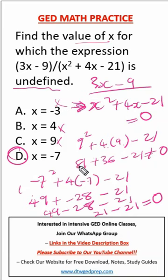If you're interested in joining our intensive classes, we have group classes at $25 per month. You can join our WhatsApp group - you'll see the link in the video description box. Don't forget to subscribe to our YouTube channel. You can also check our website dtwgdprep.com for further notes, study guides, and free practice tests.